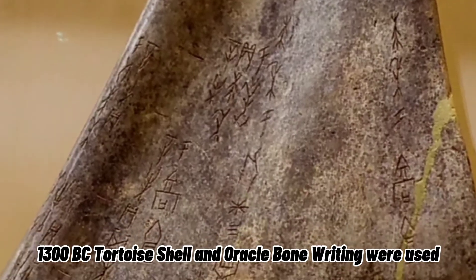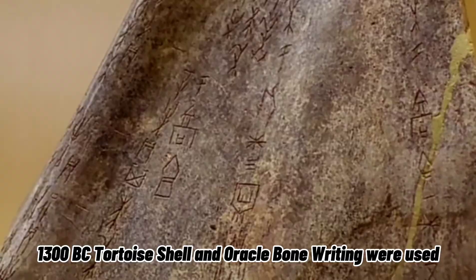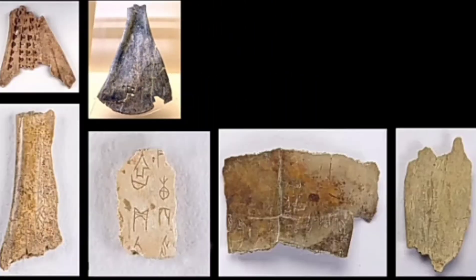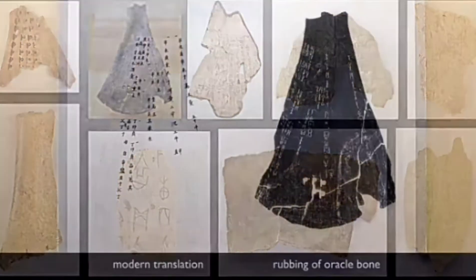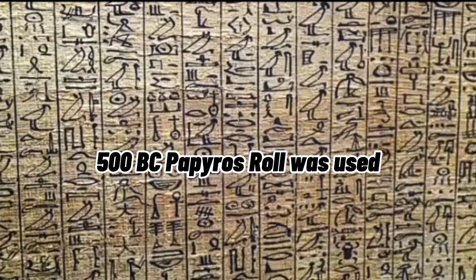1300 BC: Tortoise shells and Oracle Bone writing were used. Oracle Bones, also known as Dragon Bones, were a form of Chinese characters inscribed on oracle animal bones or turtle plastron bones, used in pyromantic divination.